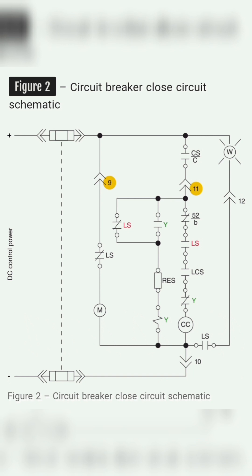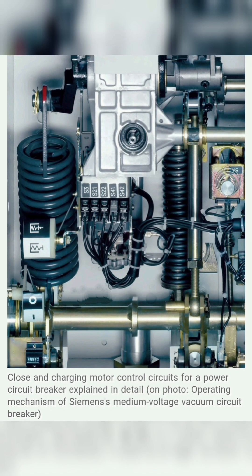Figure 2 shows the typical close and charging motor control circuit for a power circuit breaker. The function of the charging motor M is to compress the main closing spring, which is the mechanical stored energy mechanism. The energy required to trip or open the circuit breaker is provided by the tripping spring, while the energy required to close the circuit breaker is supplied by the closing spring. When the main closing spring has been fully charged and the stored energy mechanism is prepared for a closing operation, the motor cutoff switch LS creates an electrical break in the control circuit supplying the charging motor M.